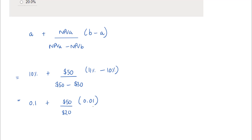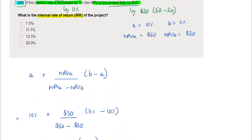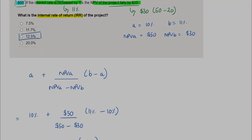Plugging this through the calculator gives 0.125, which is the same as 12.5%. Looking at the options available in this question, that presents option 3, or option C, as the answer.